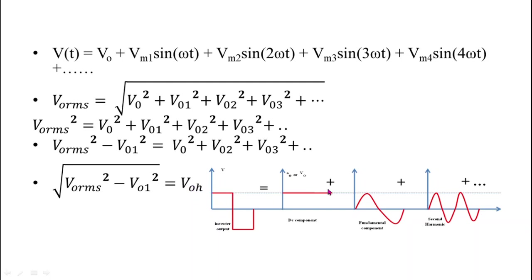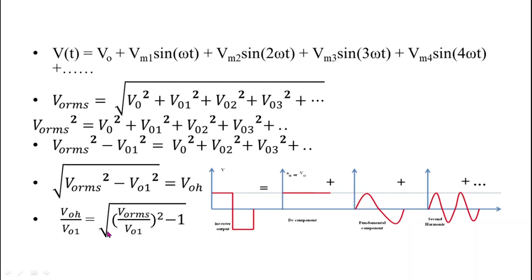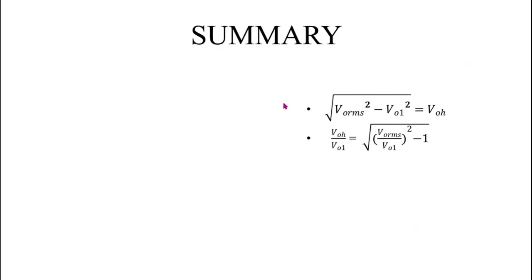Dividing both sides by V₀₁, we get: V₀H / V₀₁ = √(V₀RMS² / V₀₁² − 1), where V₀RMS is the RMS value of the output voltage of the inverter. These two expressions are very important, and on the basis of these we will derive some other important expressions.